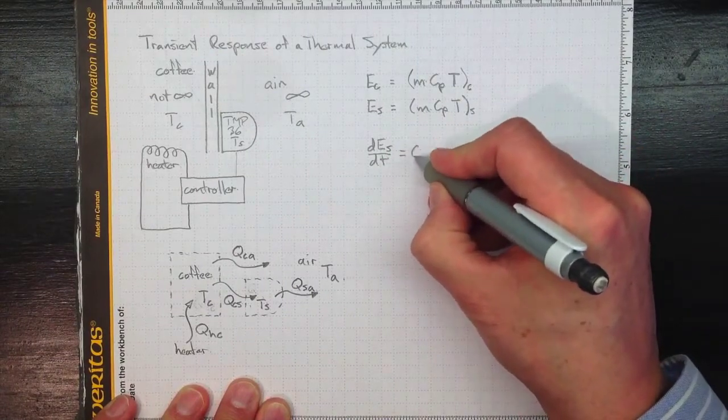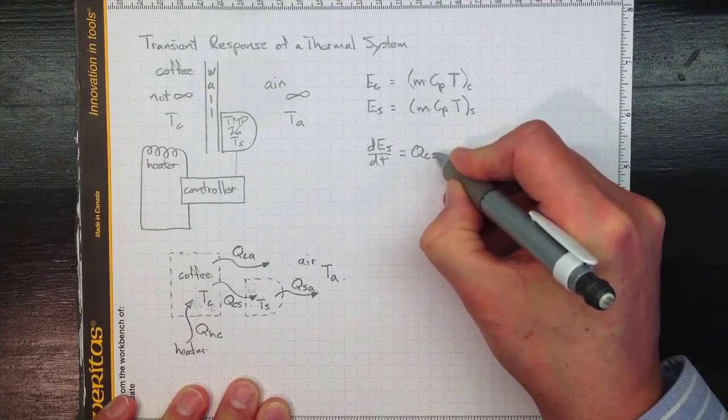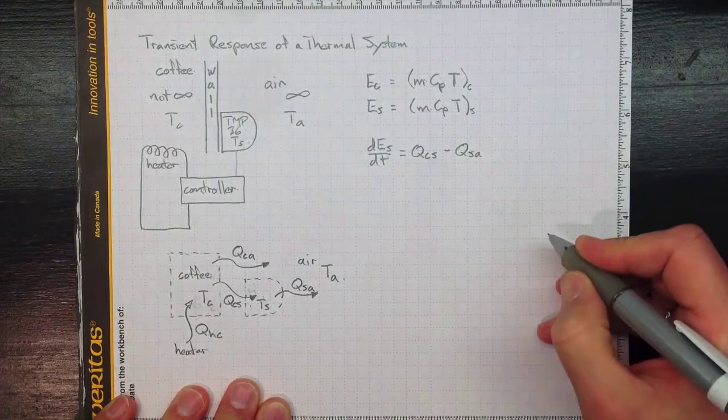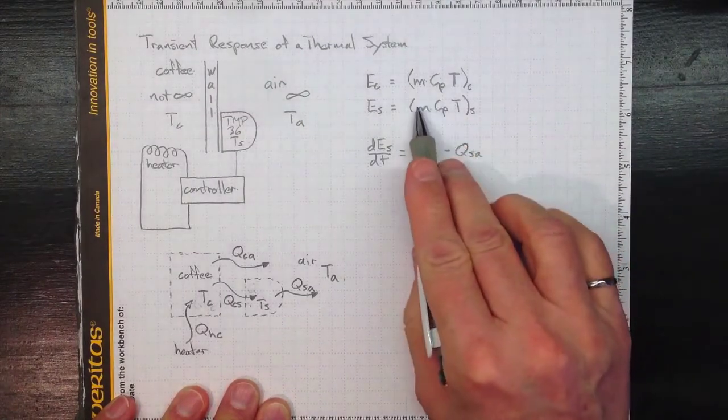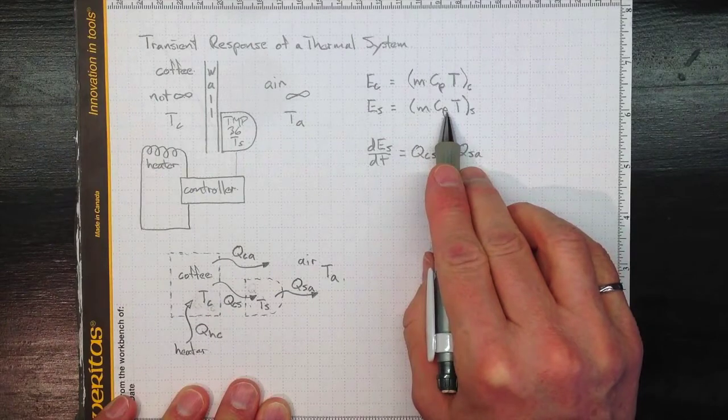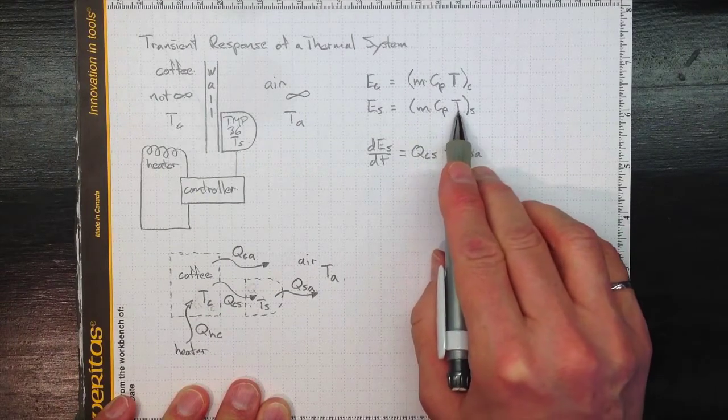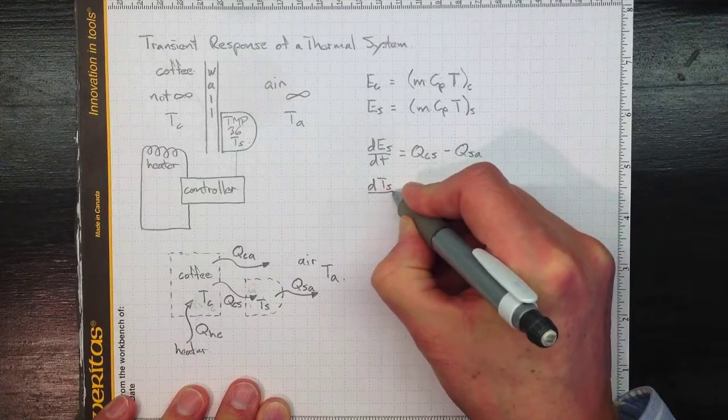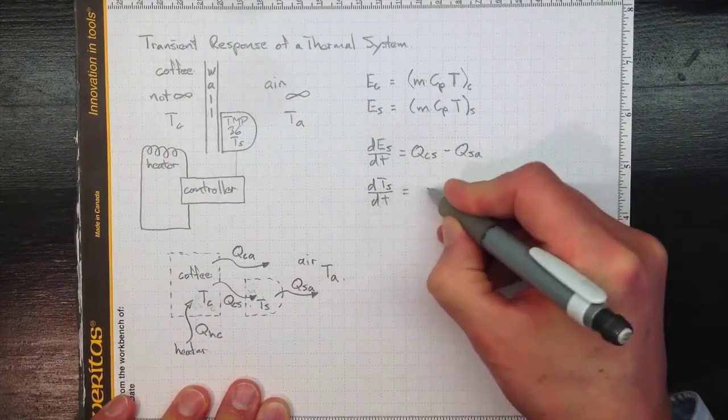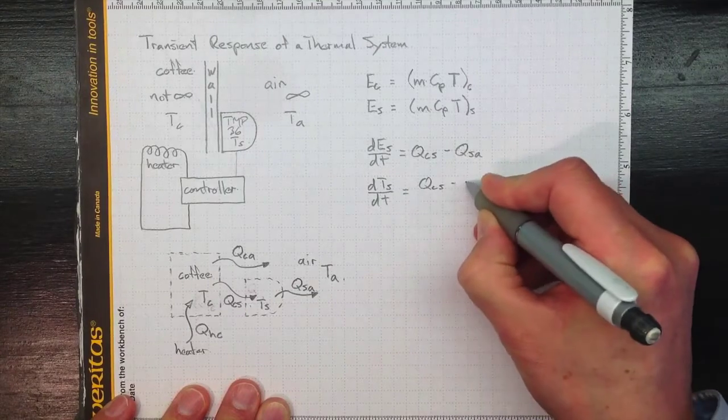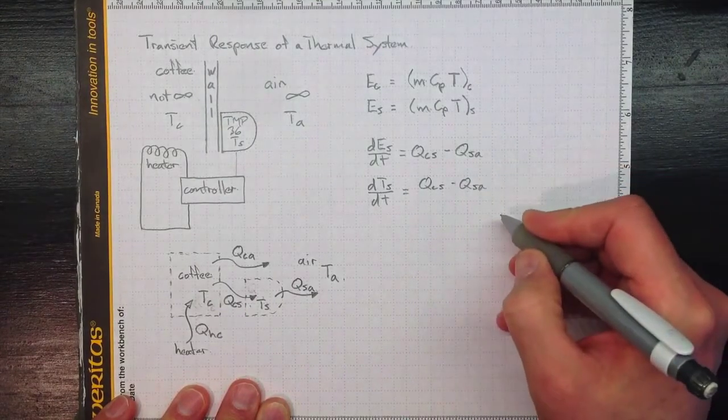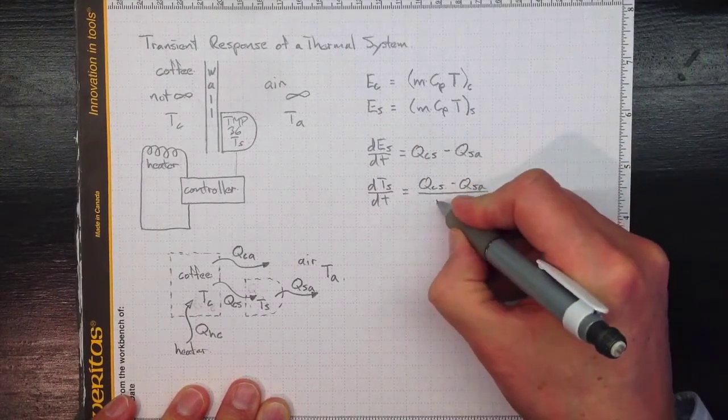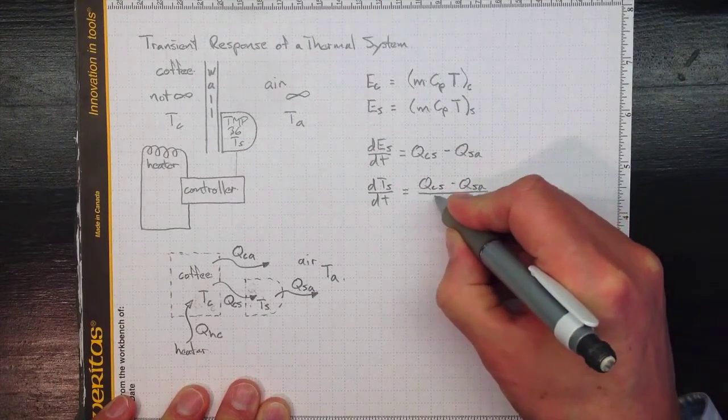So it's just Q coming in from the coffee to the sensor minus Q going out from the sensor to the air. And if we assume that the mass and the specific heat aren't changing, the sensor stays the same and its properties remain the same, then all that we're seeing is that the temperature is increasing. So the rate of change of temperature of the sensor with time will be Q_CS minus Q_SA and then it will depend on the mass of the specific heat divided by the mass and specific heat for the sensor.